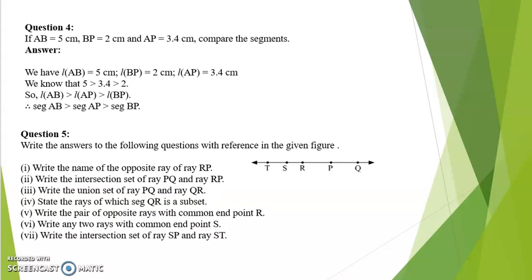Question number 4. If AB is equal to 5 centimetres, BP is equal to 2 centimetres, and AP is equal to 3.4 centimetres, compare the segments. We have length AB equal to 5 cm, length BP equal to 2 cm, and length AP equal to 3.4 cm. Clearly, 5 is greater than 3.4, which in turn is greater than 2. Therefore length AB is greater than length AP, which is greater than length BP. So segment AB is greater than segment AP, which is greater than segment BP.